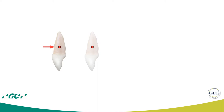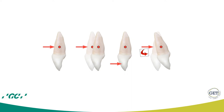If we apply a force at the center of resistance, we produce a pure translation. However, if we apply a force at the crown — which is the real case in orthodontics — what we will have at the center of resistance is a force plus a moment, which is the product of the force applied to the crown times the distance from the point of application to the center of resistance. This produces a rototranslation.